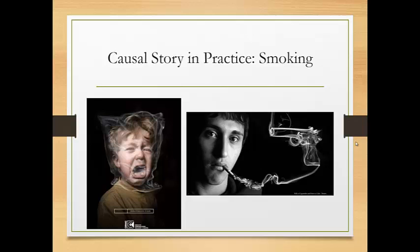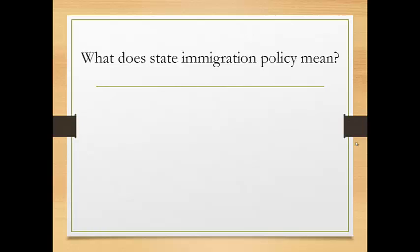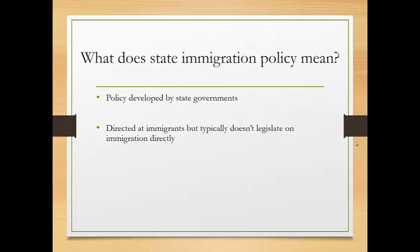The first thing we're going to do is talk about immigration as a state and local issue. State immigration policy is policy developed by state governments directed at immigrants, but it typically doesn't legislate on immigration directly. This is because of something called federal preemption — courts have consistently found that the Constitution puts the actual regulation of immigration in the hands of the federal government, meaning states don't have the authority to say who can or cannot enter the country.